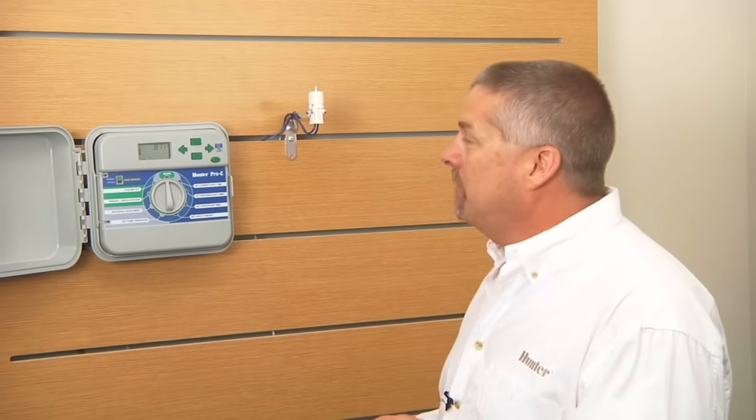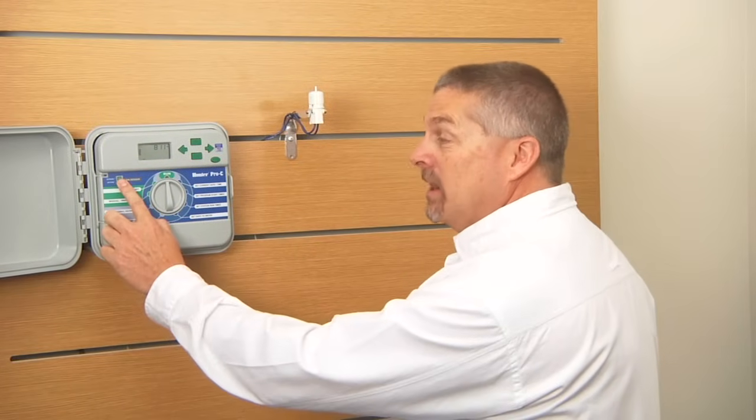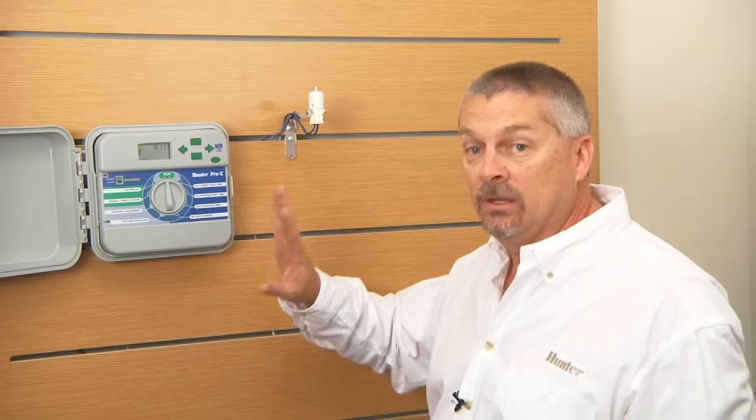So one of the common questions is, it rained last night and my sprinklers came on this morning. What's going on? I just installed the rain sensor and it's not working. One of the reasons it may not be operating is the bypass switch is in the bypass position. You want to make sure that it is inactive. If it was in bypass, the controller was ignoring the rain sensor.